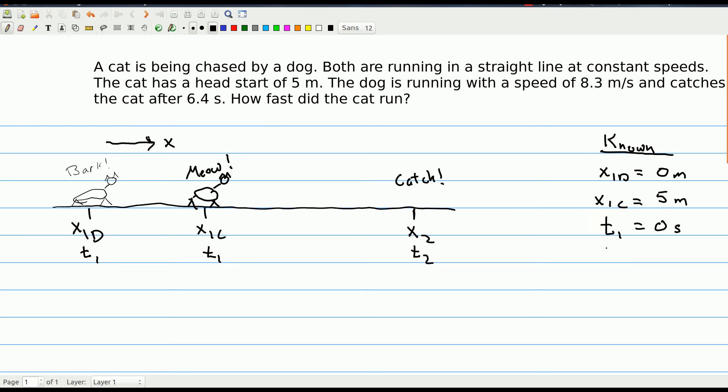So if I go ahead and draw that, here's the dog running that way. I'm going to go ahead and draw that way with some velocity. And I know that the x piece of this has a size of 8.3 meters per second. And is in the positive direction, right? It's pointing in the plus x direction. And we're trying to find how fast the cat ran. So we can find the x component of the cat's velocity. That's what we want to find.